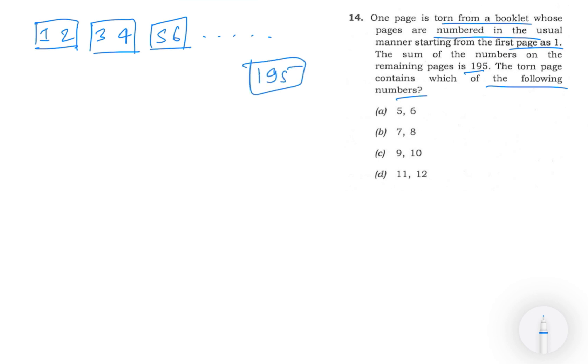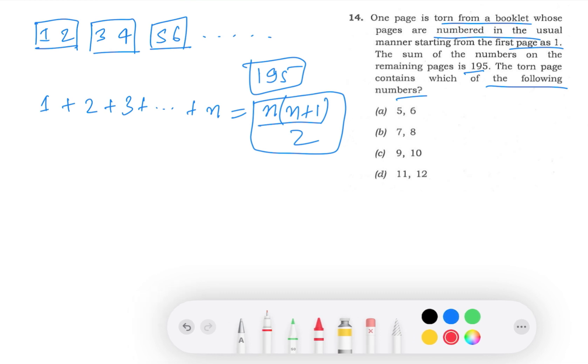We know that generally we use this formula: 1 plus 2 plus dot dot dot plus n. Our formula is n into n plus 1 by 2.